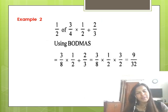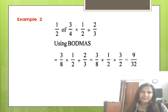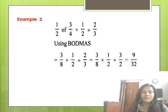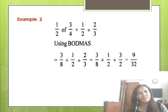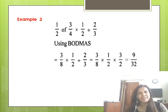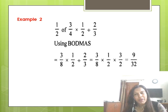Here is another HOTS example with three operations including multiplication and division. Remember: 'of' is nothing but multiplication. Change 'of' into a multiplication sign. In BODMAS, always solve the 'of' operation first, then division, then multiplication. In this example, first solve the 'of' operation: half of three-fourth equals three-eighth. Then change the division sign to multiplication and find the reciprocal of the fraction after the division sign. Solve it yourself and check whether you're getting the same answer shown on the slide.